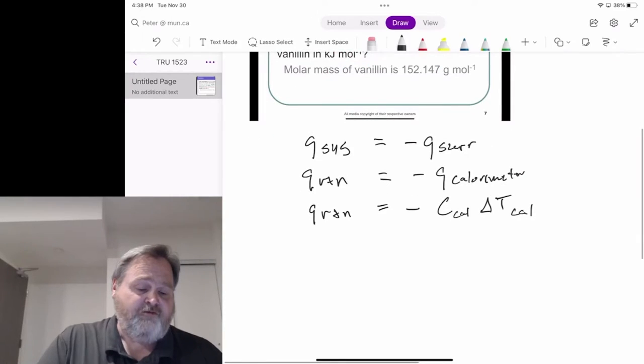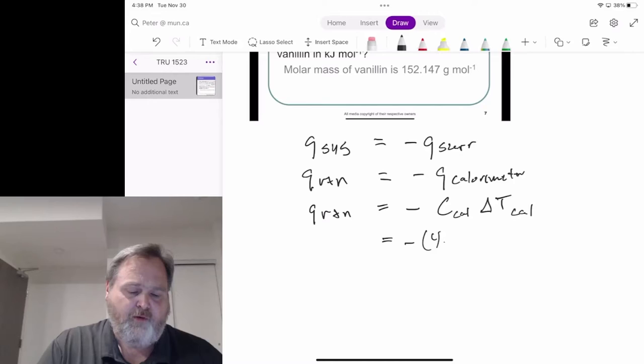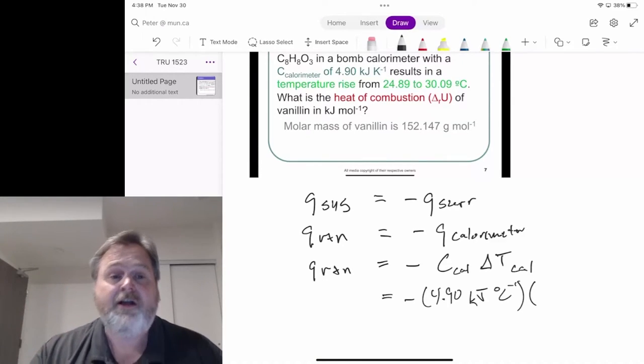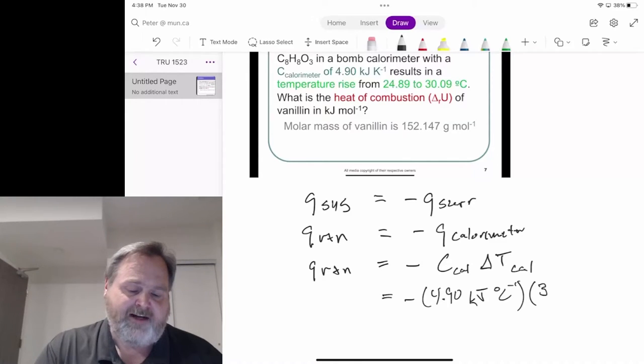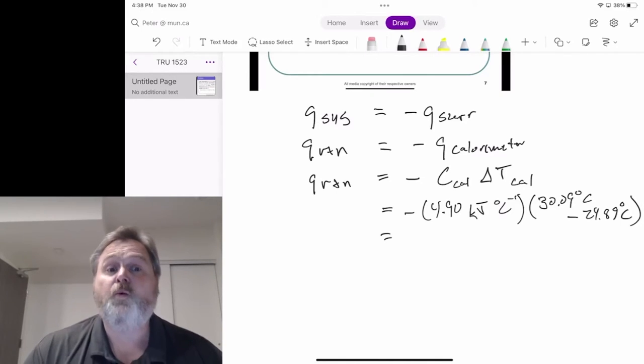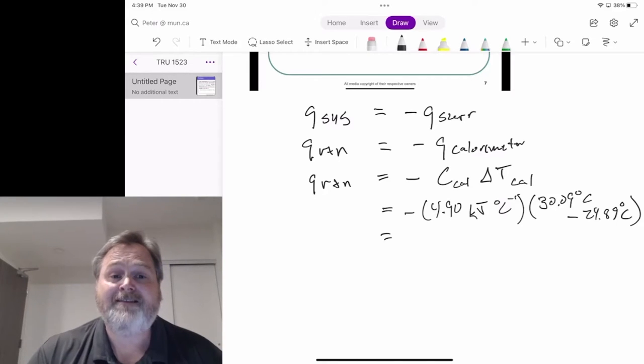Which means the Q of the reaction is the negative of 4.90 kilojoules per degree Celsius. And that's going to be our final temperature minus initial temperature. Changes always where you finish compared to where you started. We finish at 30.09 degrees Celsius. We start at 24.89 degrees Celsius. And so what we're going to see is our calorimeter undergoes a temperature increase. That shouldn't surprise us. We're burning stuff and that heat moves out into the water and other pieces of calorimeter. That's no different than us standing by a burning fireplace and feeling all the heat coming off and our temperature getting nice and toasty warm.